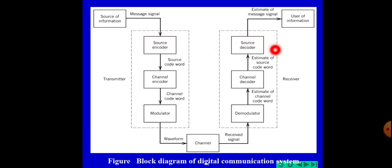At the receiver side, the source decoder will be used. The function of the source decoder is to perform the reverse operation of the source encoder. That means it converts the binary output of the channel decoder into the symbol sequences.